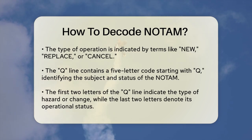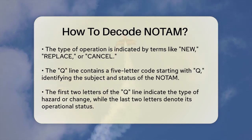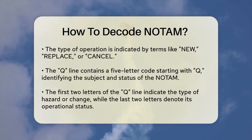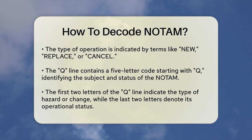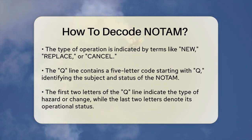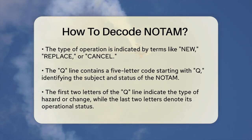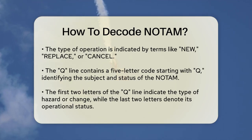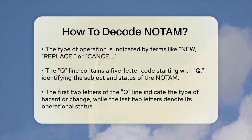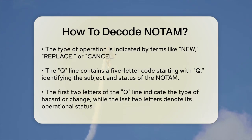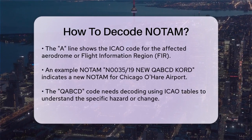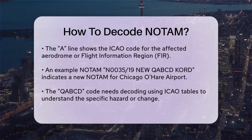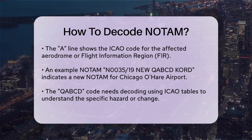The Q line is where things get a bit more complex. This line contains a five-letter code group, where the first letter is always Q. The second and third letters identify the subject of the NOTAM, and the fourth and fifth letters denote its status of operation. For instance, if the code is QABCD, AB might indicate the type of hazard or change, and CD might indicate its status, such as active or planned. The A line contains the ICAO code of the affected aerodrome or flight information region, FIR, helping you understand the geographical area affected.